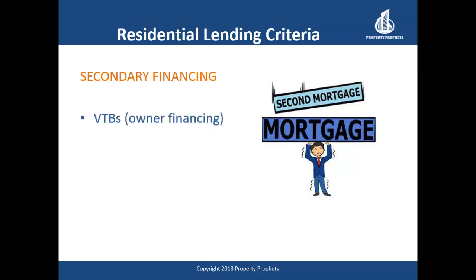The second place to look for a second mortgage is from a lender who has a B-lending program. This can come from banks, trust companies, or credit unions — often these types of lenders will entertain second-position mortgages. Every lender and their programs are different and often in a state of flux depending on the lending environment, and every deal is different so there are always variables. The rates for these mortgages will be a little higher than from lending institutions providing first mortgages, so just be aware of that.